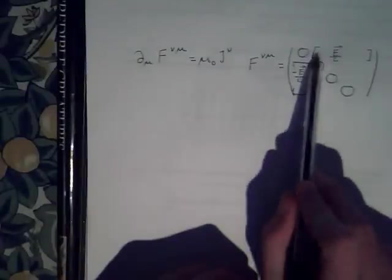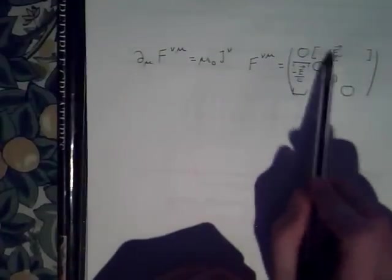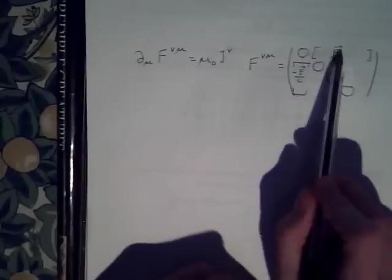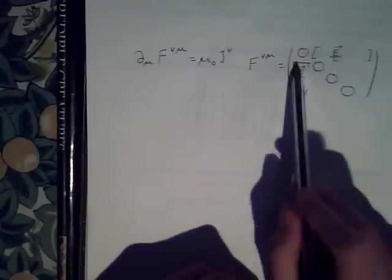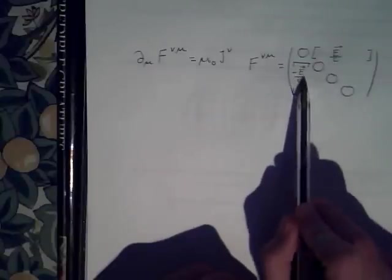These two here. This is the electric field strength, and the vector just goes along here. Here's the negative, and this one's a column vector which goes along here. And these are divided by C.